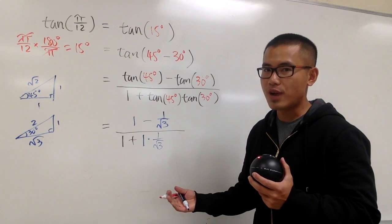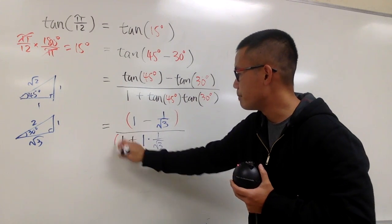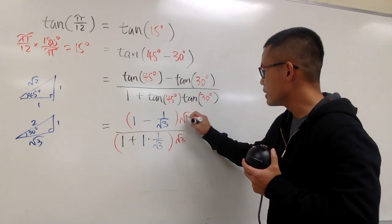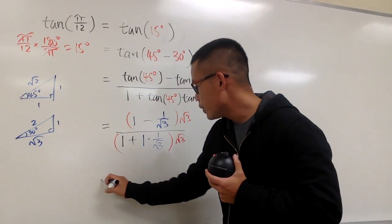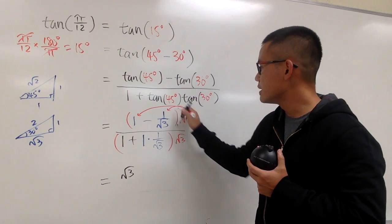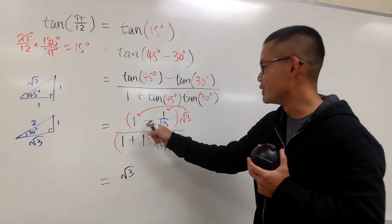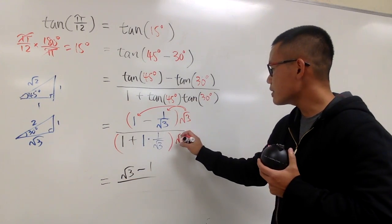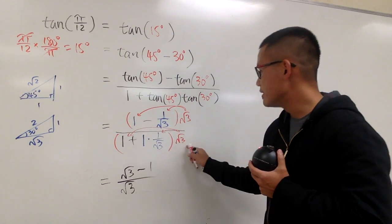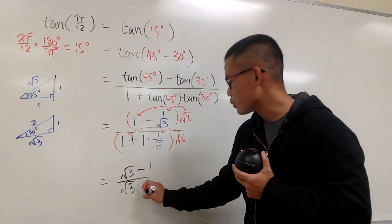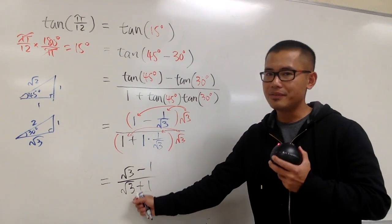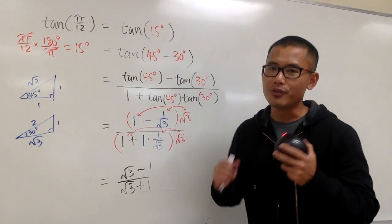To fix the complex fraction, we multiply the top and bottom by the denominator of the small fractions, which is square root of 3. On the top: 1 times square root of 3 gives square root of 3, and square root of 3 times 1 over square root of 3 — the square roots cancel — giving minus 1. On the bottom: we get square root of 3, and the square roots cancel again, giving plus 1.